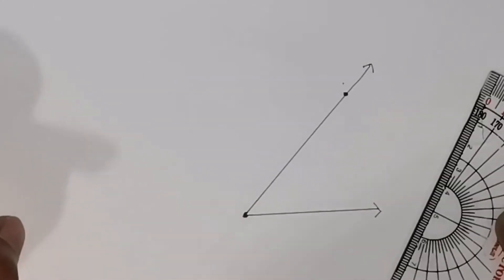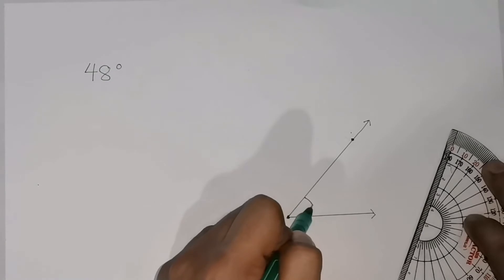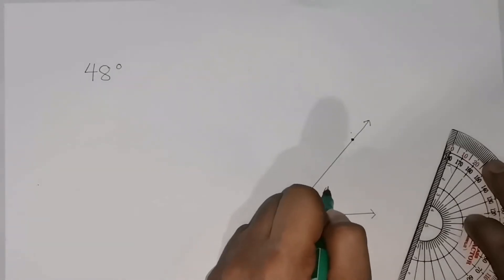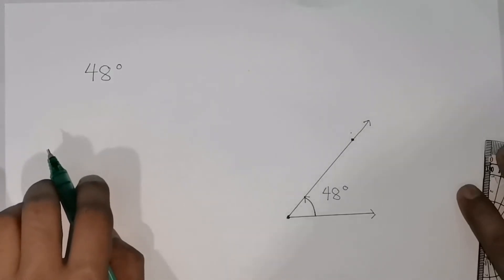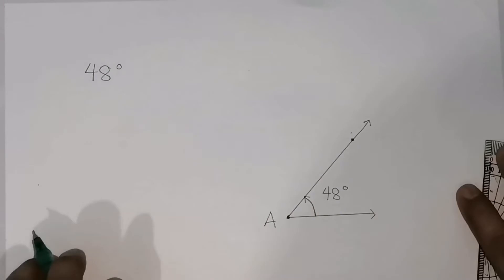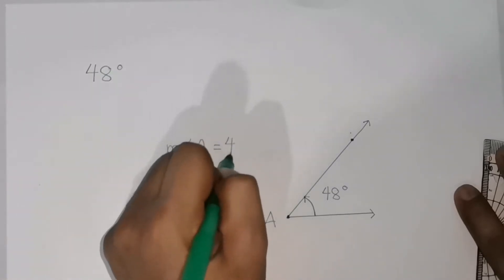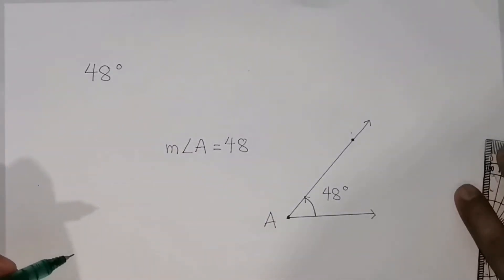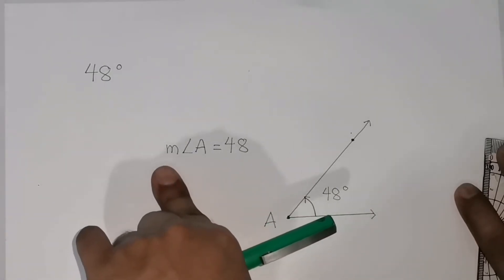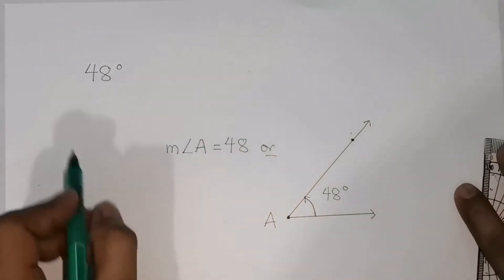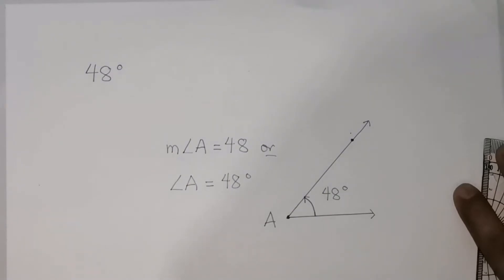Then label the angle with capital letters. We can use capital letters, or we can write the measurement inside. This is a 48-degree angle. If we label it as angle A, we can write: measure angle A equals 48 — no degree symbol needed since we already have the word 'measure' — or alternatively, angle A equals 48 degrees.